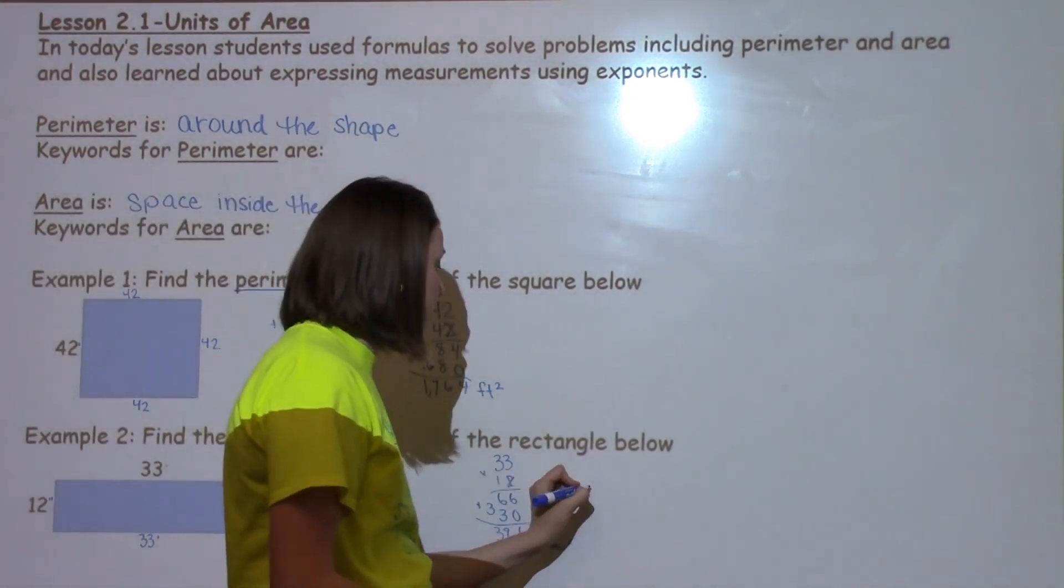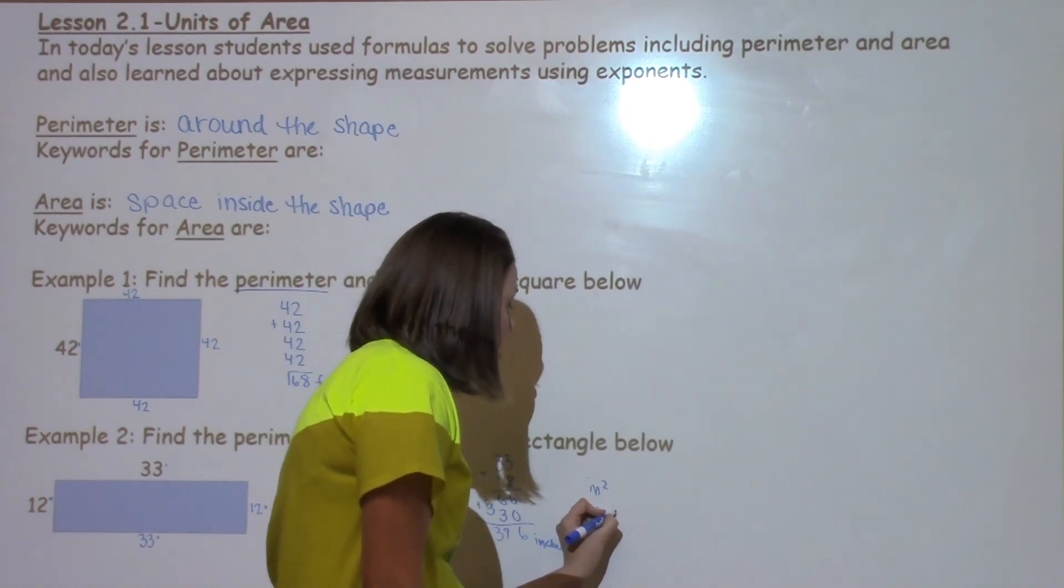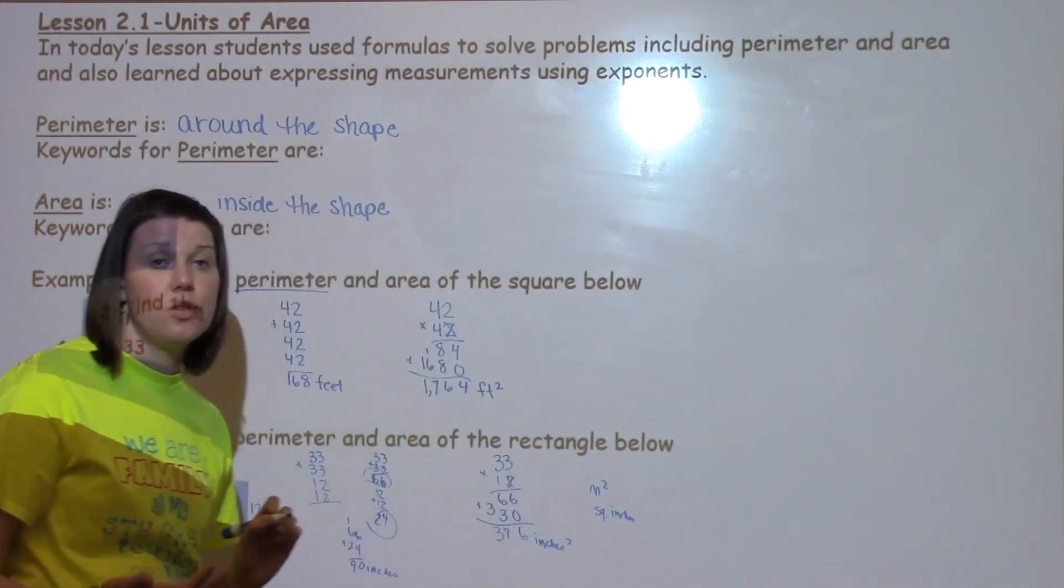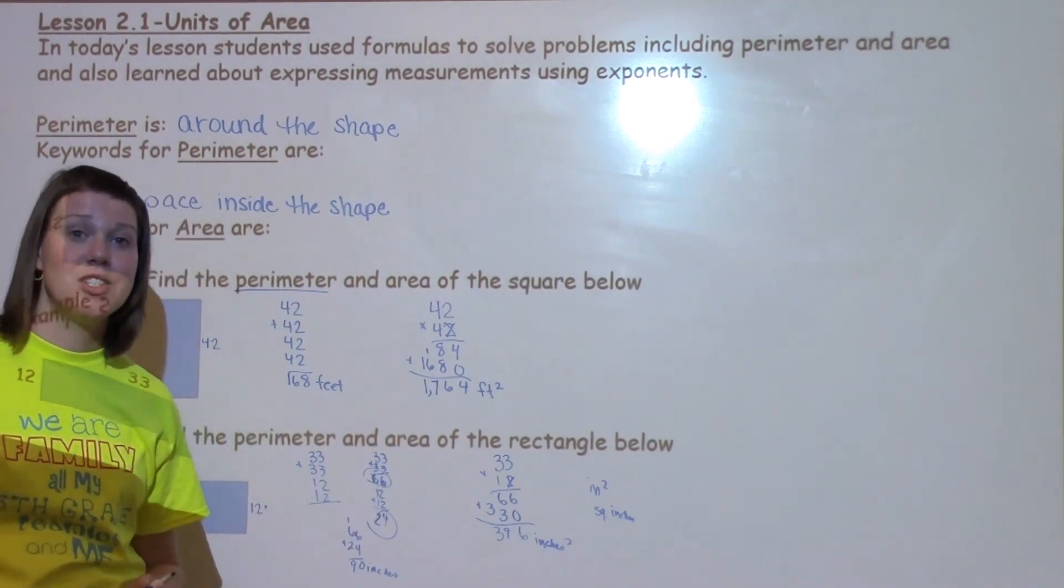Now there's a couple different ways you can write that. Some students prefer to go in squared. You can write sq inches. There's a couple different labels. It's just really important that students know that when they're dealing with area, it's always square. If you have any questions about 2.1, see your math teacher.